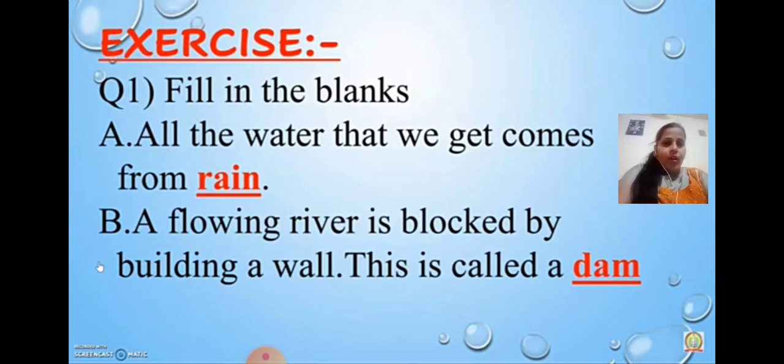First, A: All the water that we get comes from rain, so underline rain. B: A flowing river is